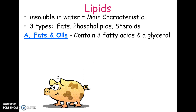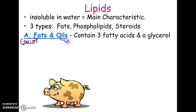The first group we'll talk about are fats and oils. Their structure is the same: they're made of three fatty acids attached to a little three-carbon molecule called a glycerol. The difference between a fat and an oil is that fats are solids at room temperature. Most fats are animal products — bacon grease, lard, butter, the marbling in a steak are all solids.